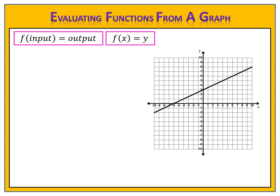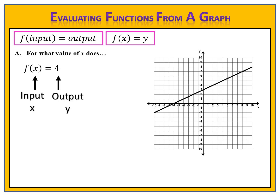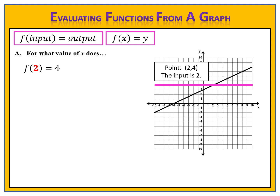Now let's look at a slightly different example. Using the same graph, the directions say: for what value of x does f of x equal 4? This time we know the output but not the input. The output is 4, so we draw a line horizontally across our graph through the output of 4 and find where the graph intersects that line. The point is (2, 4), so the input is 2. Since they asked for the value of x, we must say x equals 2.